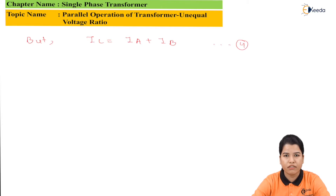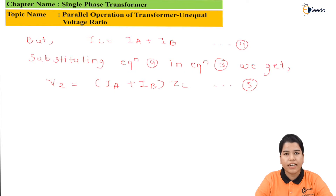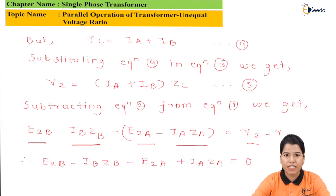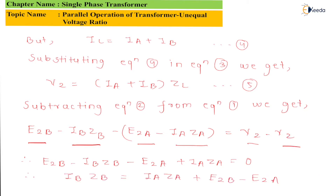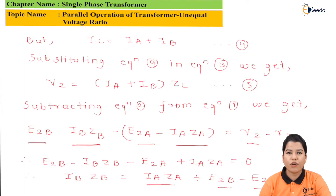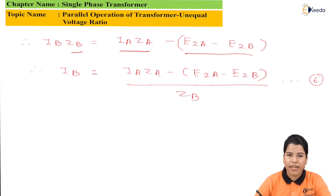Substituting equation 4 in equation 3, we get E2B minus IB·ZB minus bracket E2A minus IA·ZA equals V2 minus V2. Further solving, we get E2B minus IB·ZB minus E2A plus IA·ZA equals zero. Rearranging, we get IB·ZB equals IA·ZA plus E2B minus E2A. Further rearranging, the formula for IB can be written as IB equals IA·ZA minus bracket E2A minus E2B, all divided by ZB. Let this be equation number 6.